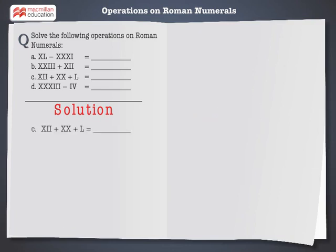Next, first we convert these Roman numerals into Hindu-Arabic numerals. XII is equal to 12, XX is equal to 20, and L is equal to 50. Now add 12, 20, and 50.